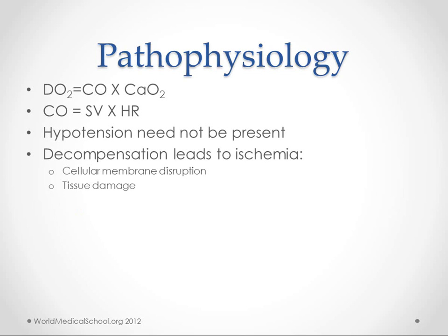Pathophysiology — I know you're thinking we were finished with this, but I'm bringing it back. We're going to talk about this because it's important to the mechanism of shock and it's going to have a big factor on how we treat it. The DO2 stands for delivery of oxygen. CO is cardiac output. CAO2 is the content of arterial oxygen. This equation says that the amount of oxygen delivered to the body is equal to cardiac output times the amount of oxygen in the blood.